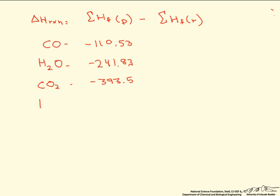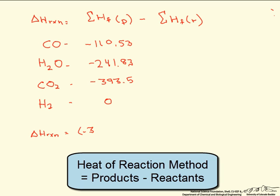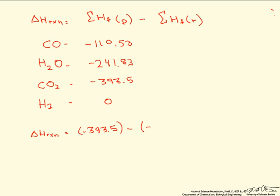And the heats of formation of substances in their elemental form, such as H2, equals 0. So now let's calculate this heat of reaction. And so it's minus 393.5 kJ per mole minus minus 241.83 plus minus 110.53. Those are ours coming in. And our heat of reaction is minus 41.14 kJ per mole.